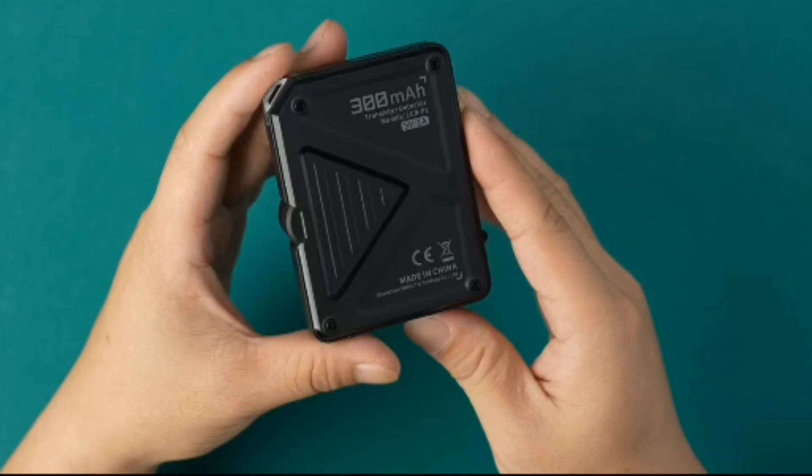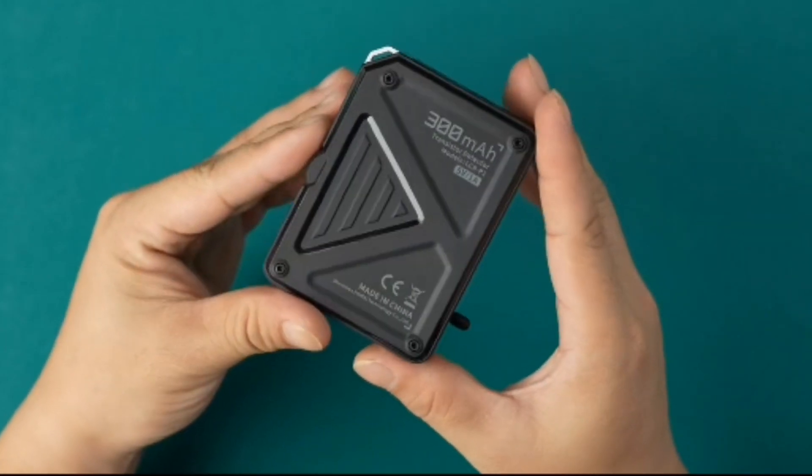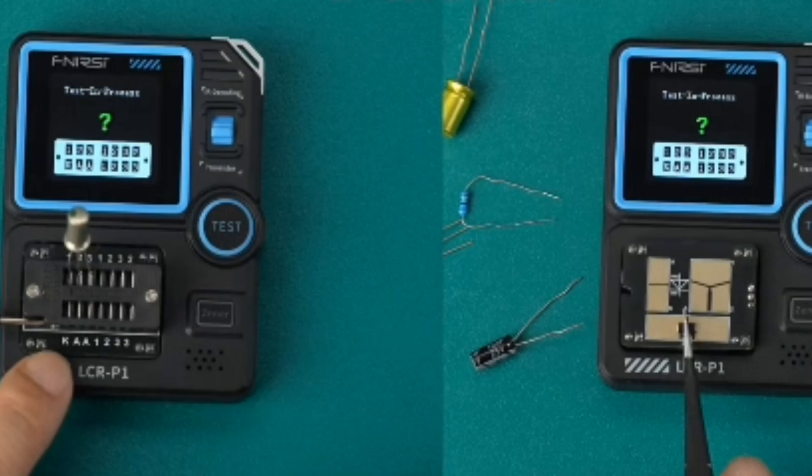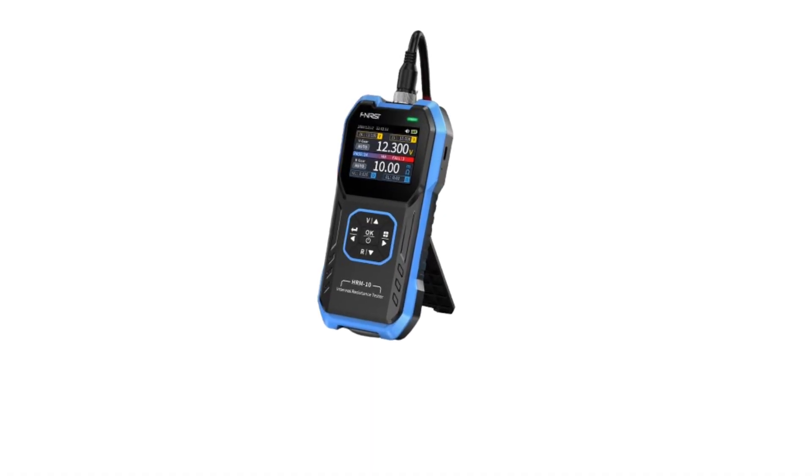Ensure the multimeter is rated for your applications, particularly if you're working with high voltages. Look for models with CAT ratings, for example CAT 3 or 4, for safety in various environments.